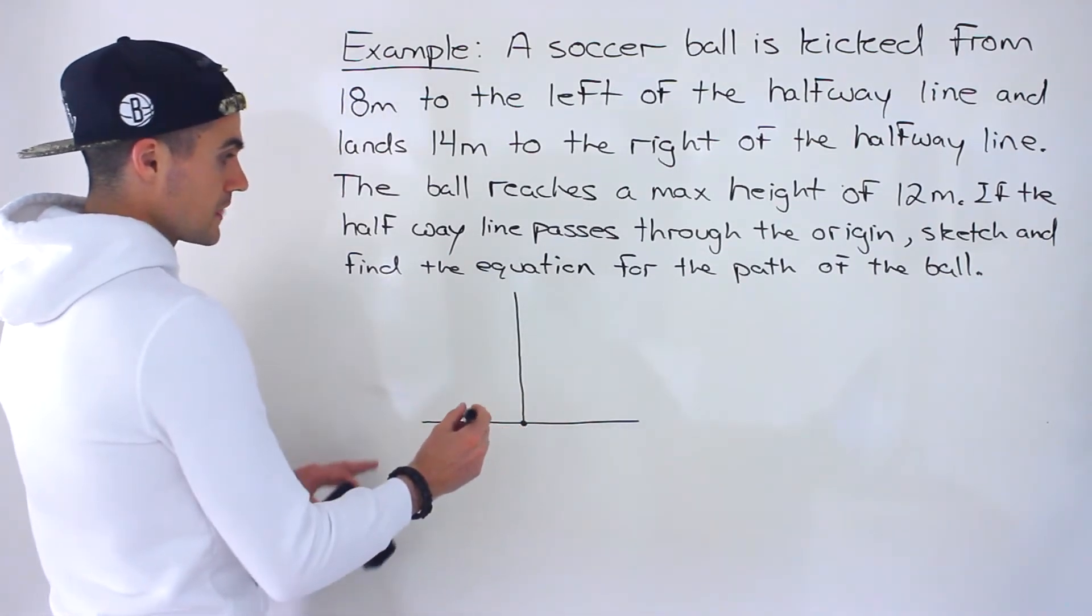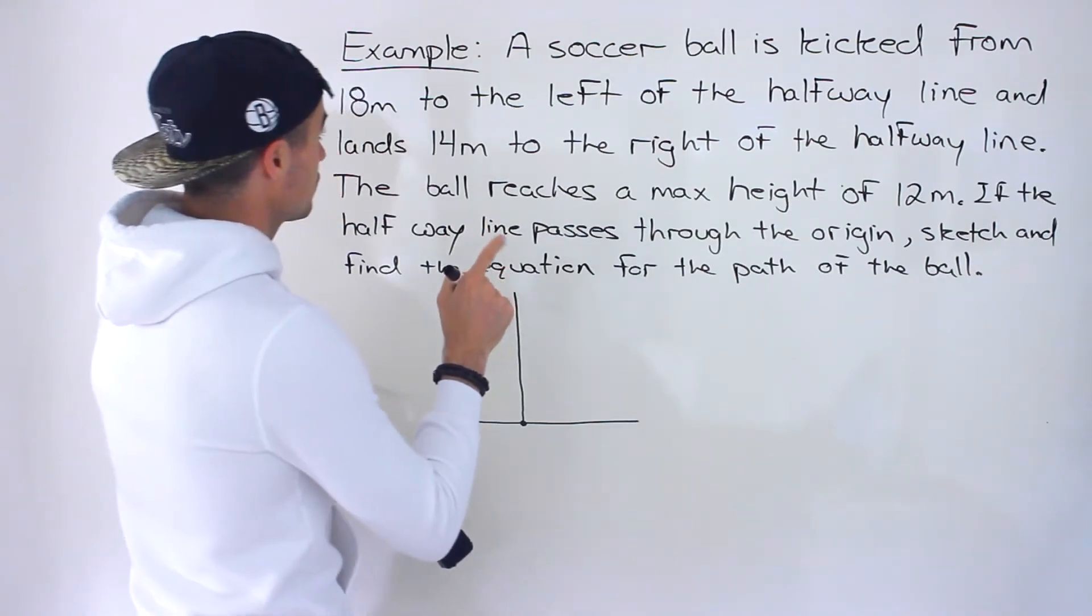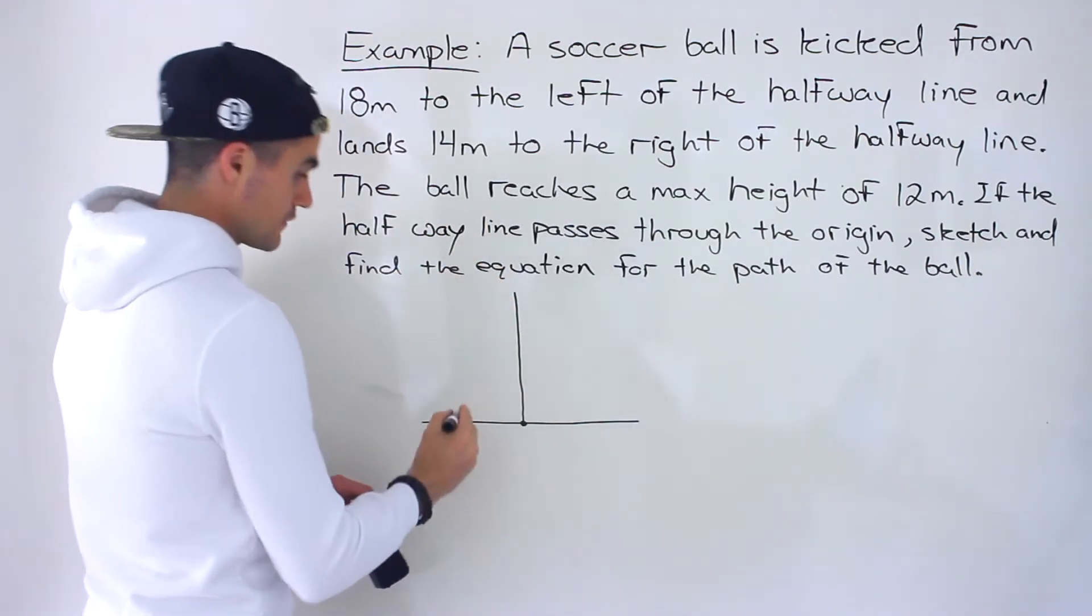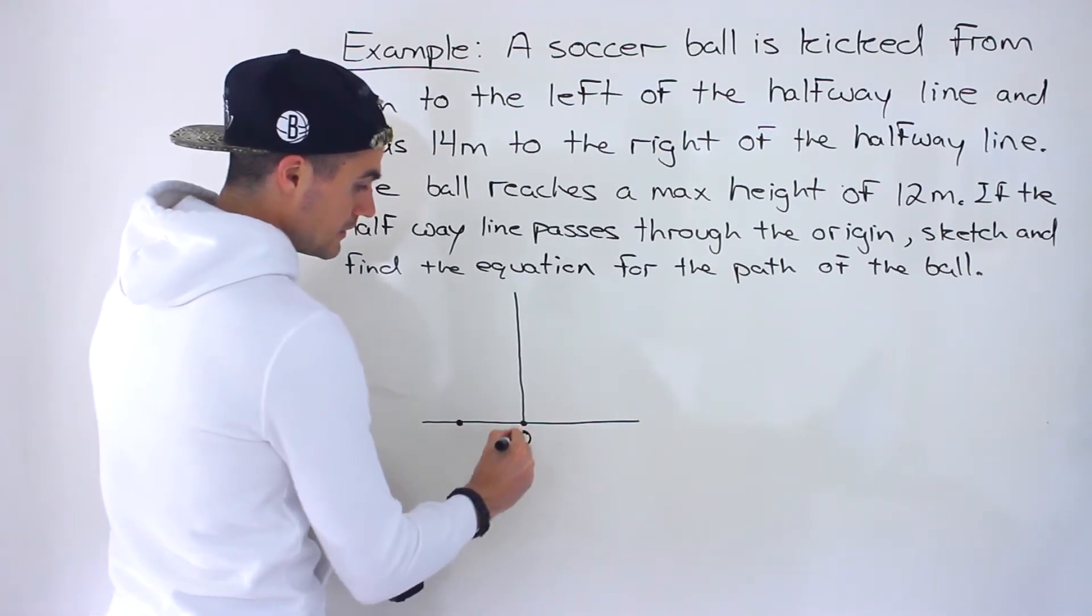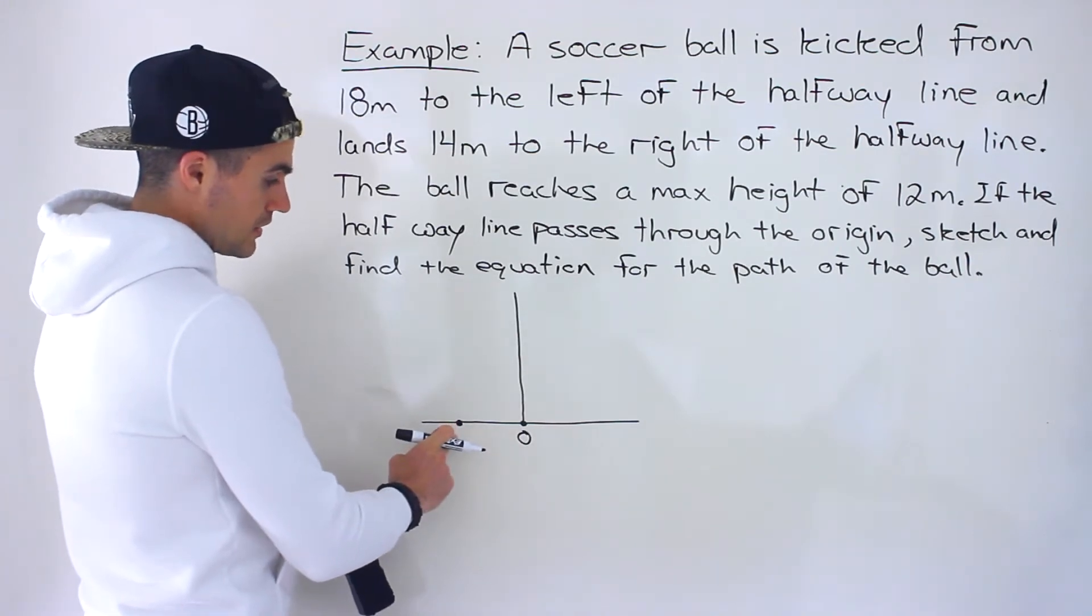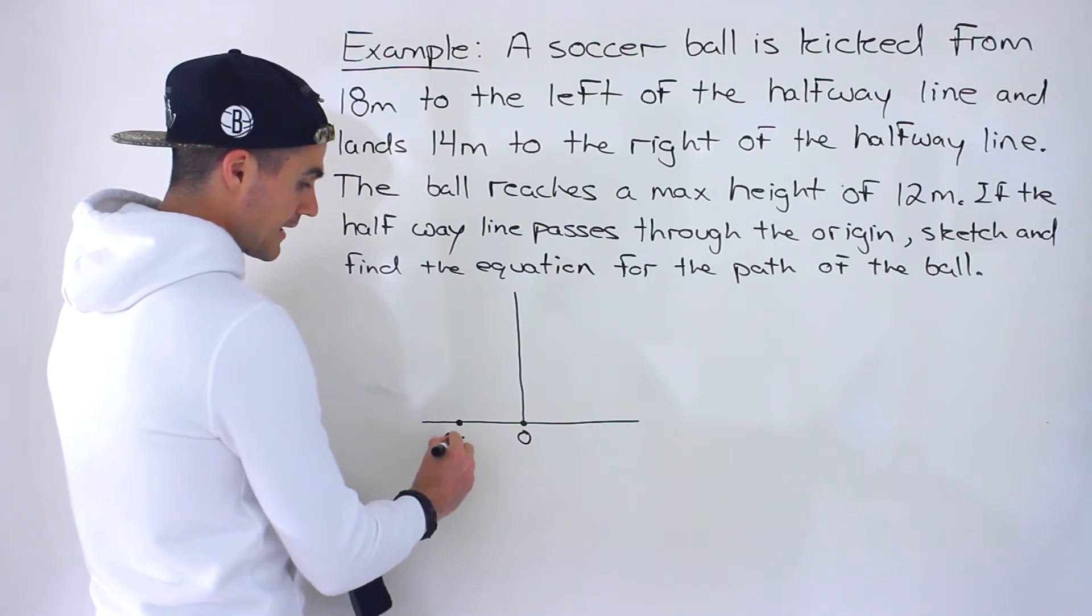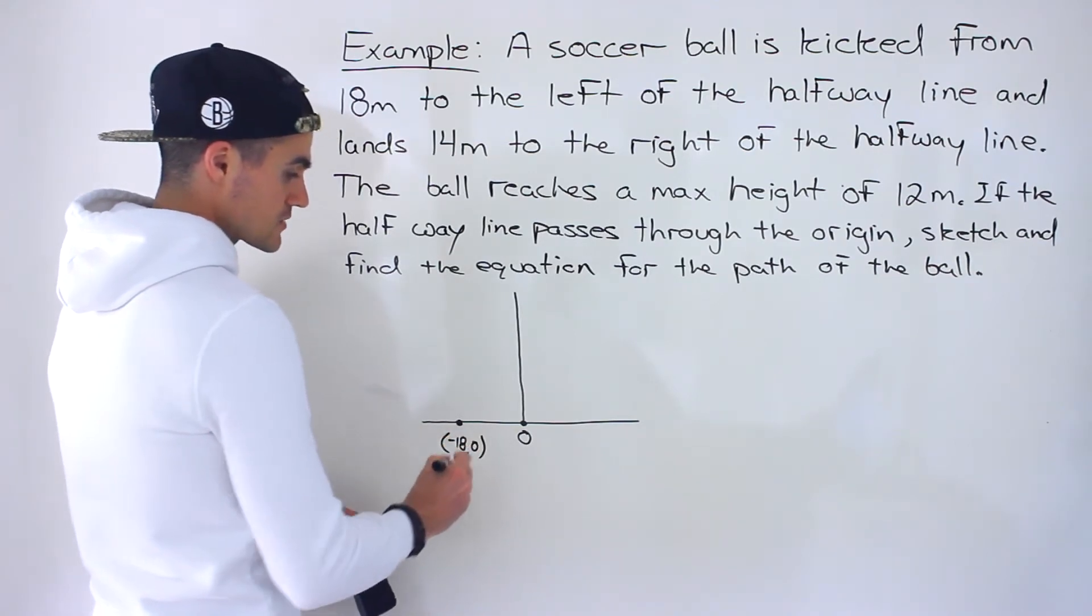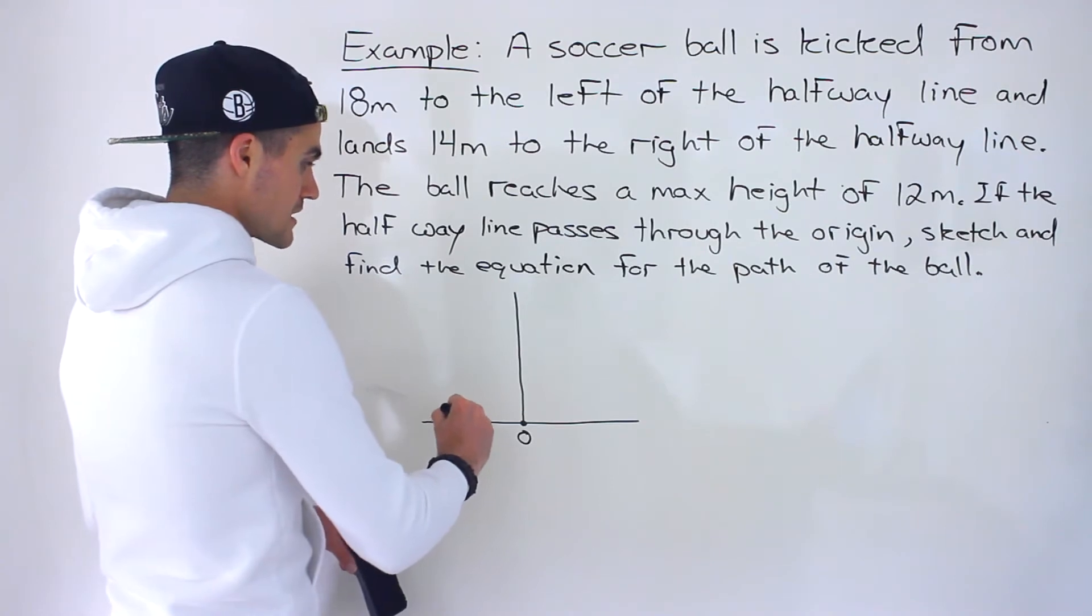So we're going to draw this scenario. We're told a soccer ball is kicked from 18 meters to the left of the halfway line. So that would be over here because the halfway line is our reference point. So we'll put zero here. 18 meters to the left, this point here would be negative 18 and zero.